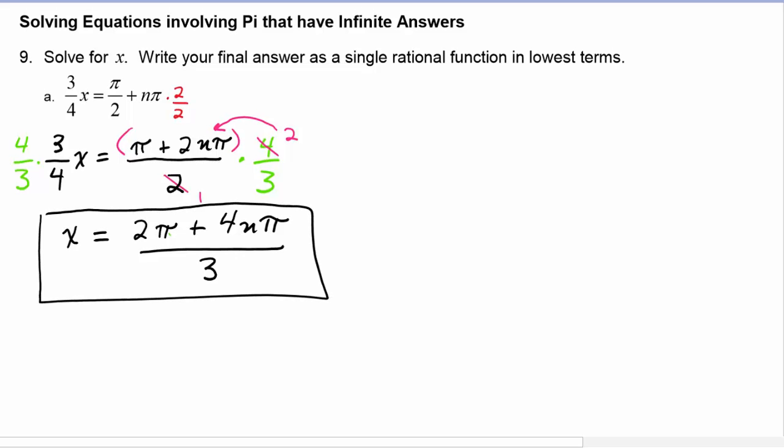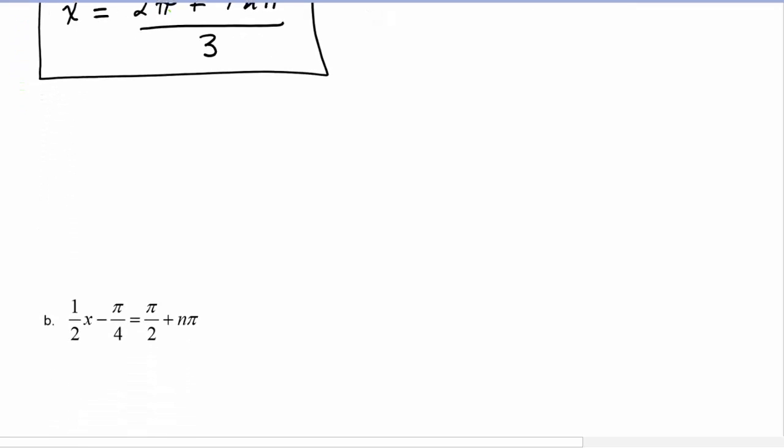Now let's take a look at example B, where we have one half x minus pi over four is equal to pi over two plus n pi. The first step is going to be to add pi over four to both sides.